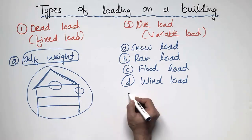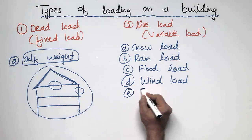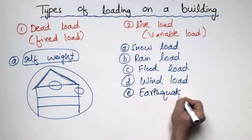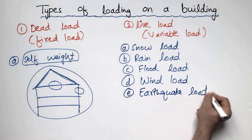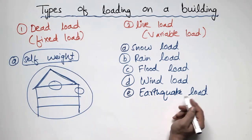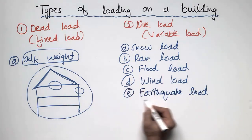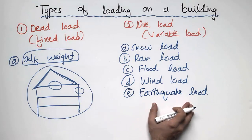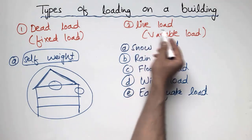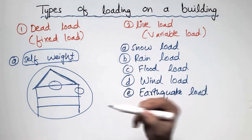The fifth type of load is the earthquake load, which is also a live load. This load is time-dependent — it comes for just 30 seconds or one minute. That is why the earthquake load is called a time-dependent load. It is also under the category of live load because it changes with the location and with time.